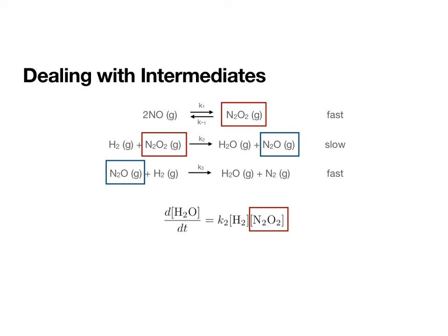To start this off, we find the rate law based upon the rate determining step. For this case, the rate, the change of the concentration of water with respect to time, is equal to K2 times the concentration of H2 times the concentration of N2O2. So this N2O2 is an intermediate. That means we have to figure out an expression for this concentration that involves only reactants or products so we can remove the intermediate from the rate law.